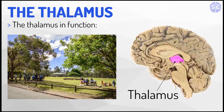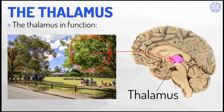To demonstrate this, let's say you're looking at a picture of a park and you're noticing the green tree in front of you. This is sent to the thalamus, and the thalamus identifies it as color and imagery, and sends it to the occipital lobe at the back to be processed.